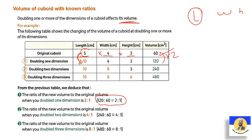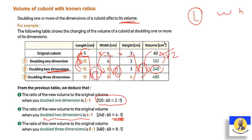If we double two dimensions: length becomes 10, width becomes 8. We multiplied by 2 twice, so 2×2=4. Therefore 60 times 4 = 240. The ratio is 4 to 1. If we double all three dimensions: we multiply by 2 three times — 2×2×2=8. So 60 times 8 = 480.